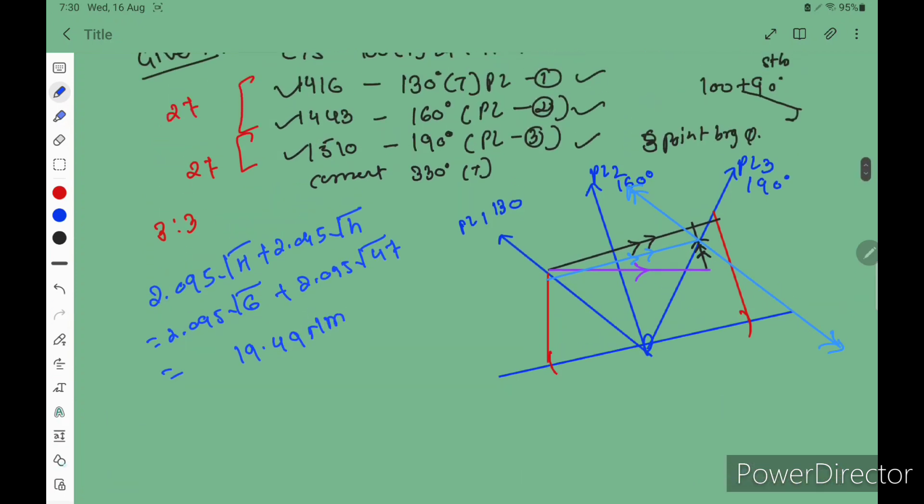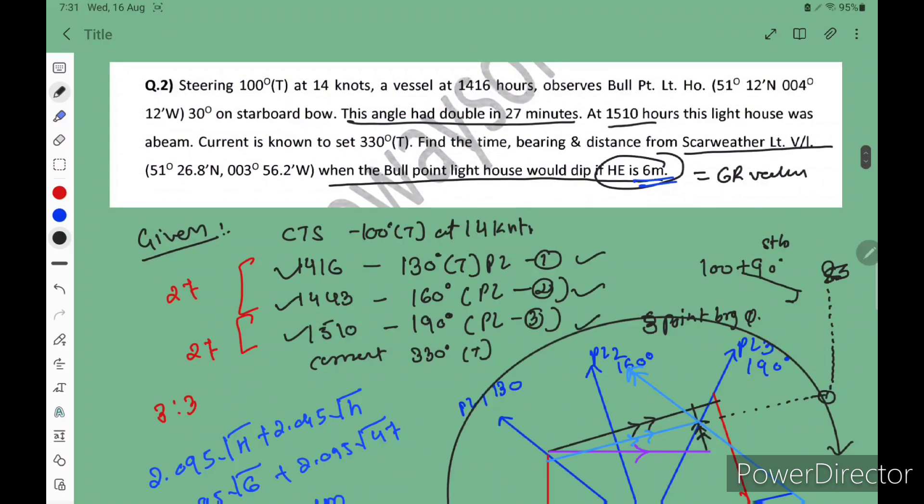Now from here you have to draw 19.49 nautical miles arc. Now you square by the lighthole. Now you have to extend your CMG and this is your bearing and range from the Squareweather Lighthouse.